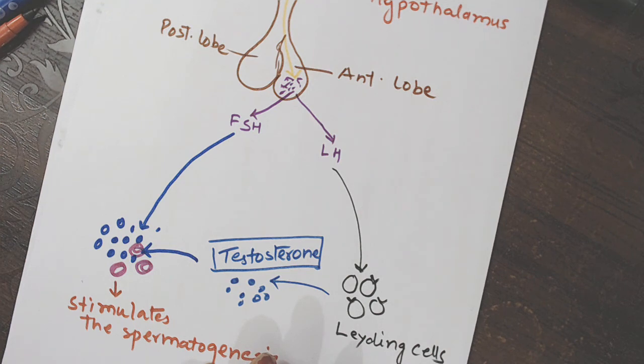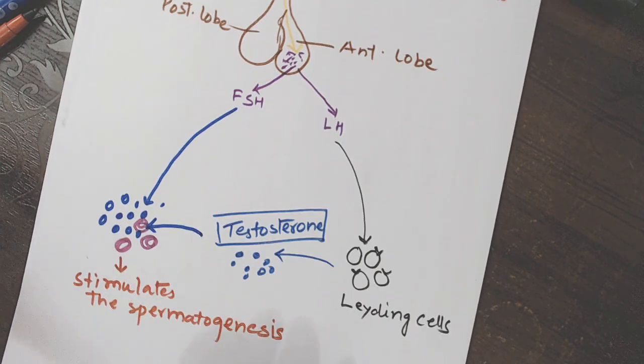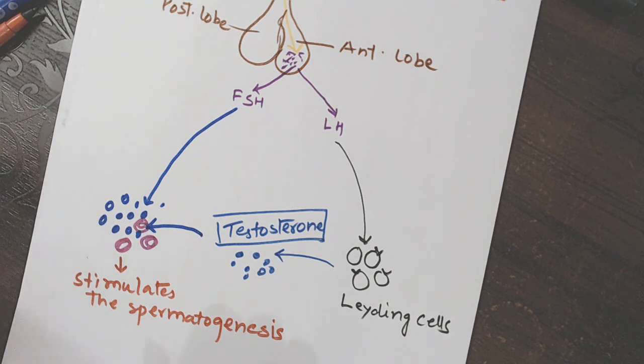What is it going to increase now? The process of spermatogenesis. Getting my point? So, ABP plus FSH which means that the process of spermatogenesis ko maintain karke rakhenge at the time of puberty.